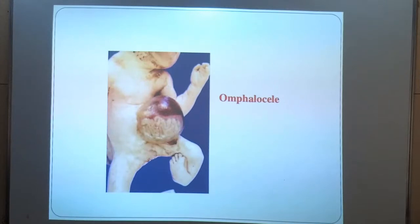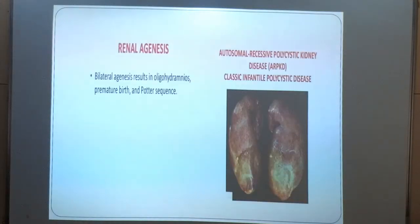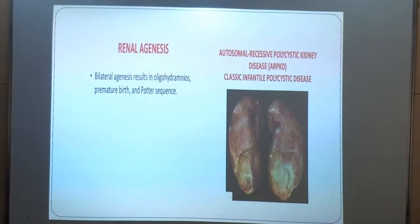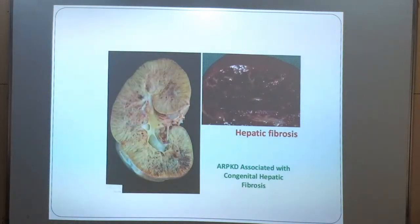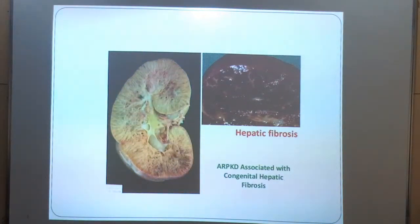This is a picture showing omphalocele — protrusion of abdominal contents outside the abdominal cavity. These are other pictures showing renal agenesis, which results in oligohydramnios, premature birth, and Potter sequence. It is autosomal recessive polycystic kidney disease. This is hepatic fibrosis, which is associated with autosomal recessive polycystic kidney disease, presenting as congenital hepatic fibrosis.